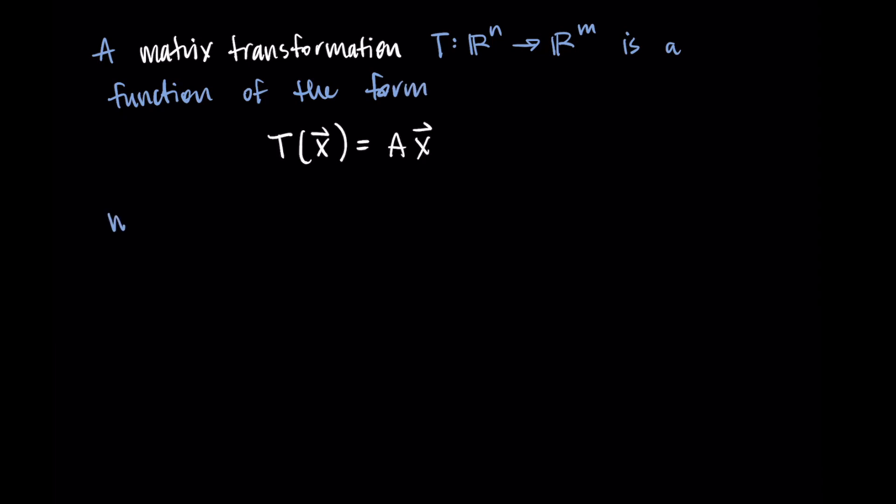So I'm going to give us the definition of matrix transformation. Some of this notation might be a little different from how you've seen functions in the past. For our definition, we say that a matrix transformation T, which starts in R^n and maps to R^m, is a function of the form T(x), where x is a vector, equal to A times x, where A is an m by n matrix and x is a vector in R^n.